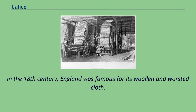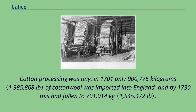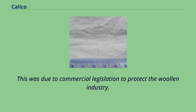In the 18th century, England was famous for its woolen and worsted cloth. That industry, centered in the east and south in towns such as Norwich, jealously protected their product. Cotton processing was tiny — in 1701 only 900,775 kilograms of cotton wool was imported into England, and by 1730 this had fallen to 701,014 kilograms. This was due to commercial legislation to protect the woolen industry.